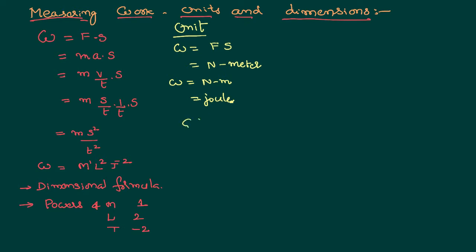Suppose you want to measure work in the CGS system. There, force is measured with a unit called dyne, and distance is measured with a unit called centimeter. So in the CGS system its unit is dyne centimeter. In the name of another scientist it is called erg. So work done in the SI system has a unit Joule, and in the CGS system it has a unit erg.